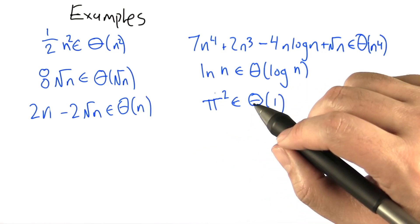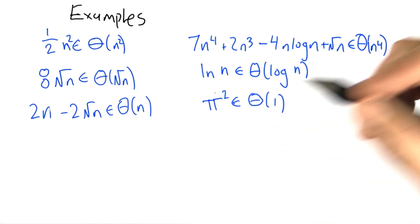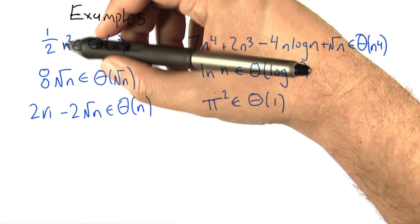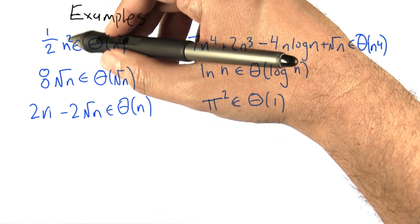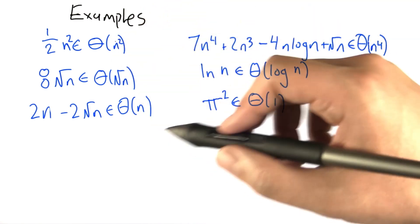What Big Theta allows us to do is basically write complicated functions in a much simpler way. We can take a function like 1/2 times n² and just think of it as Big Theta of n².